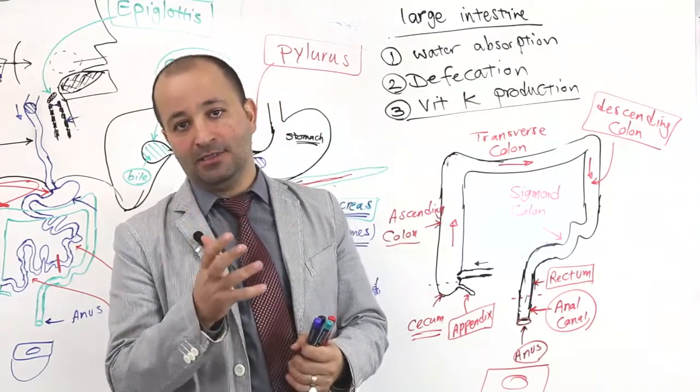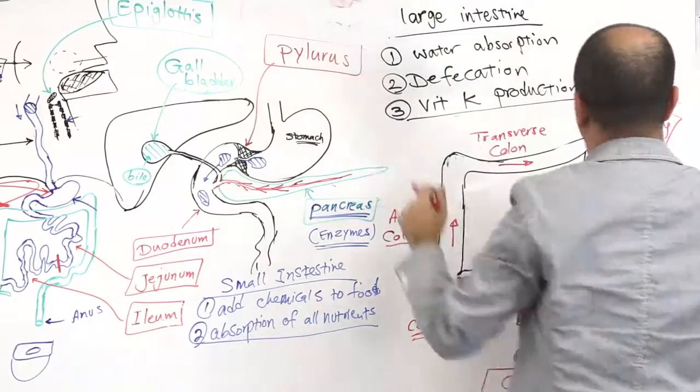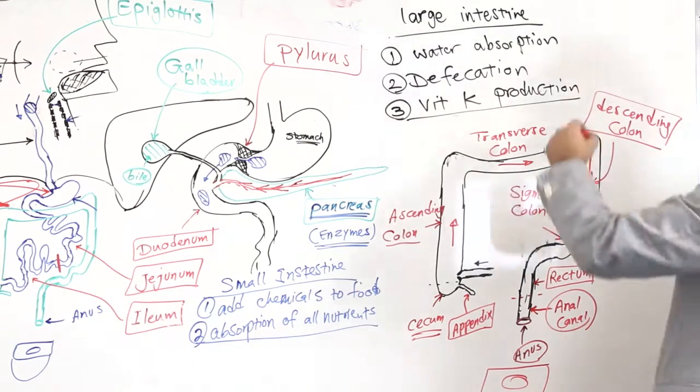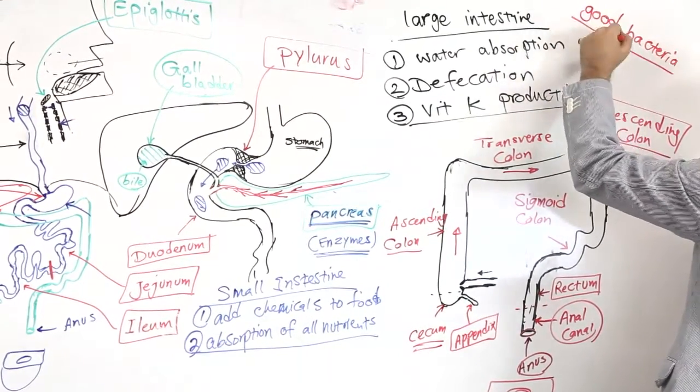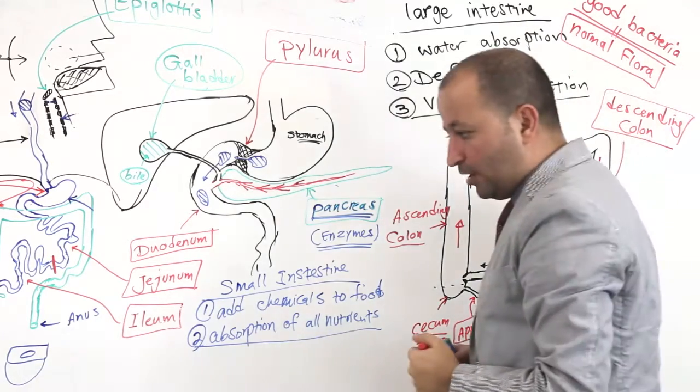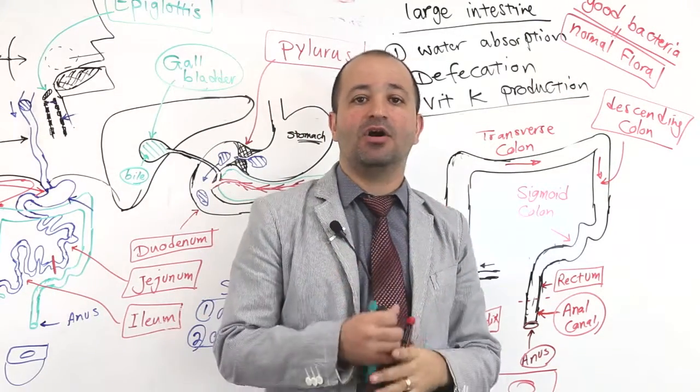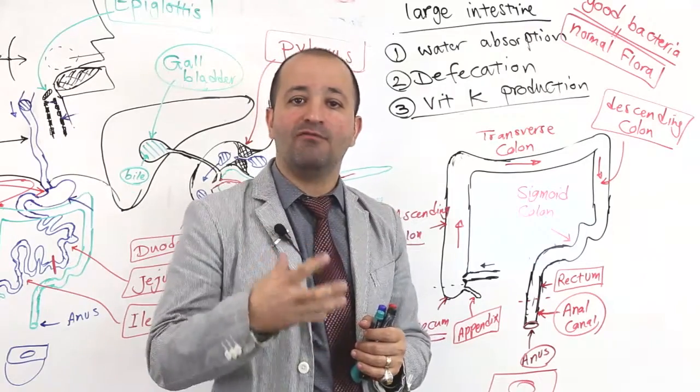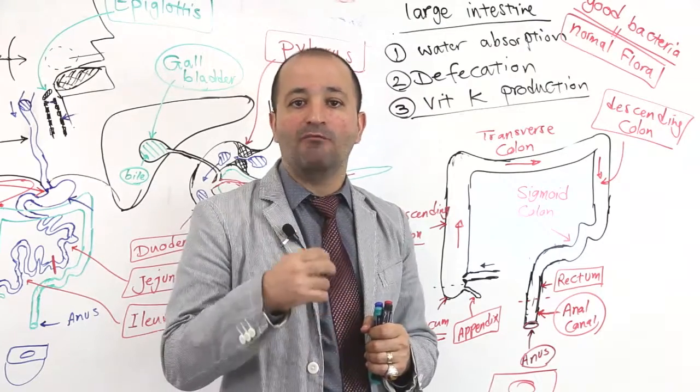Not all the bacteria are bad. Some bacteria are good. The good bacteria live in your large intestine. I just want you to know their medical term. We call them normal flora. If you hear the term flora, normal flora is the actual bacteria that they live inside your large intestine. These bacteria, they do so many things for you. One of the things is production of vitamin K. Vitamin K is one of the critical components of blood clot formation.